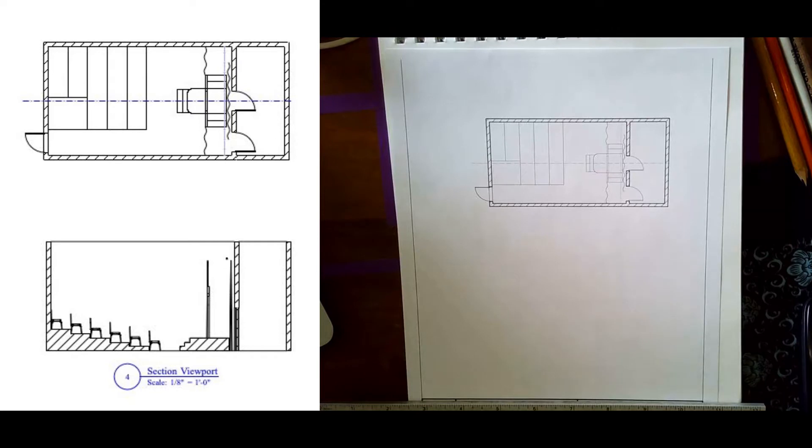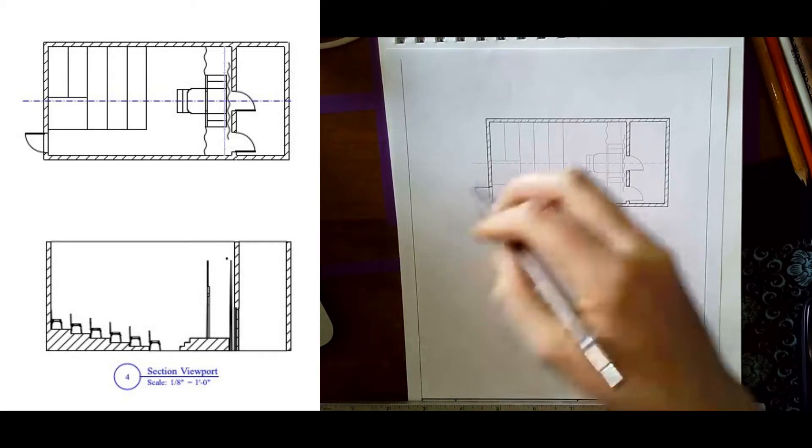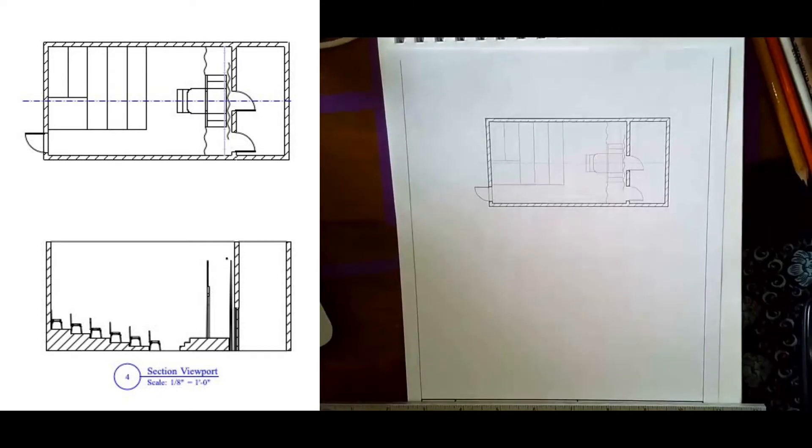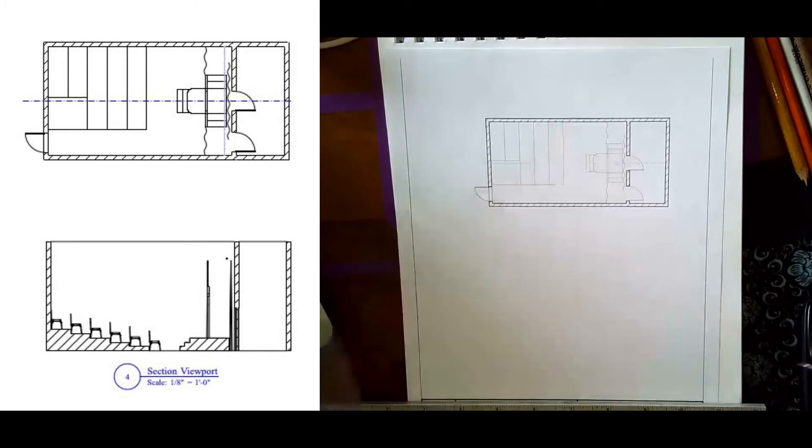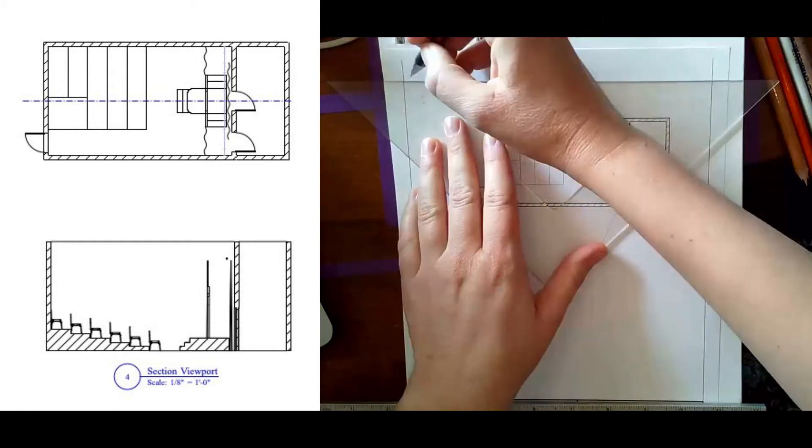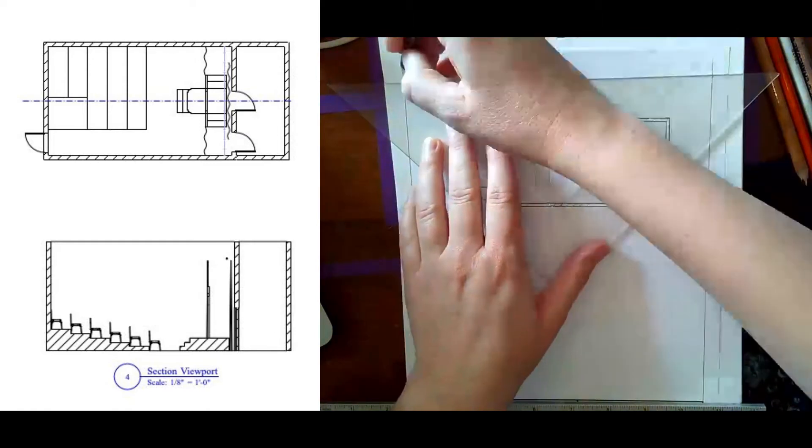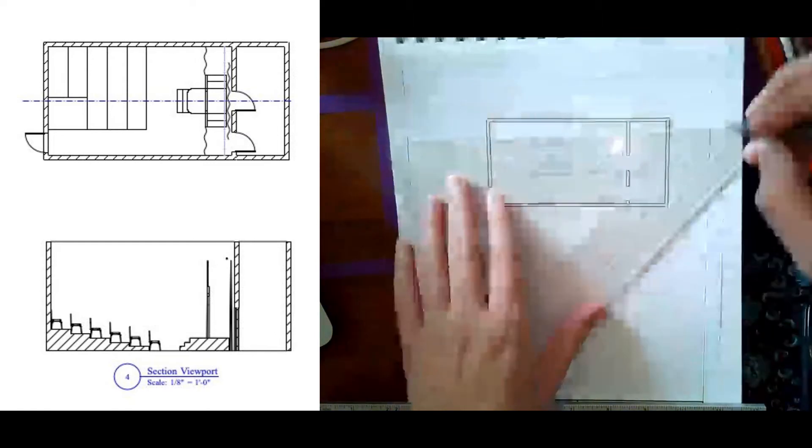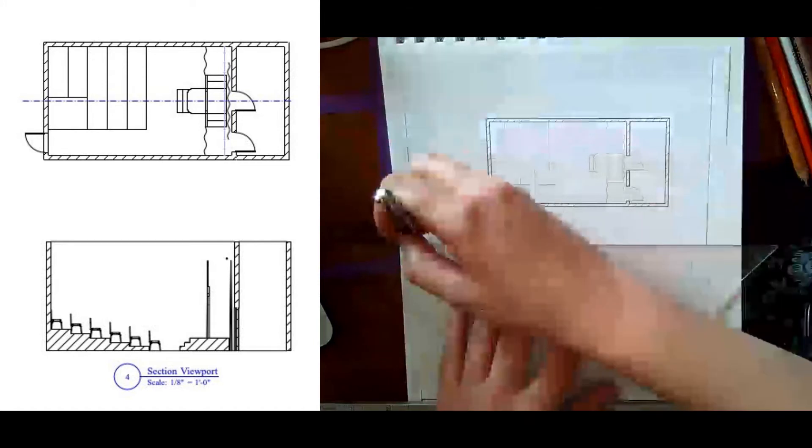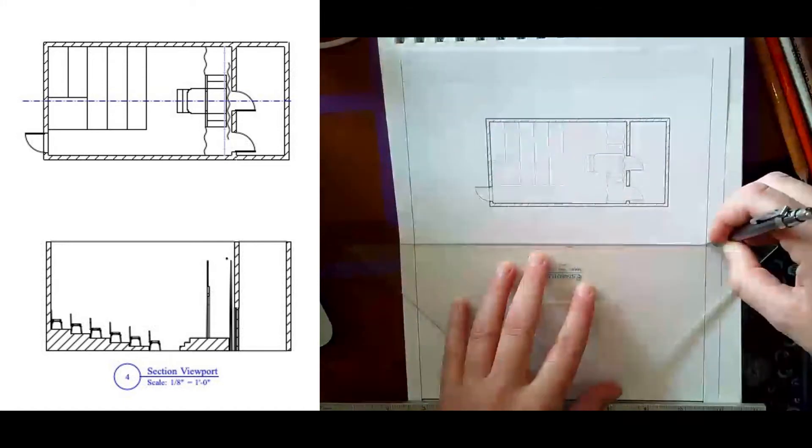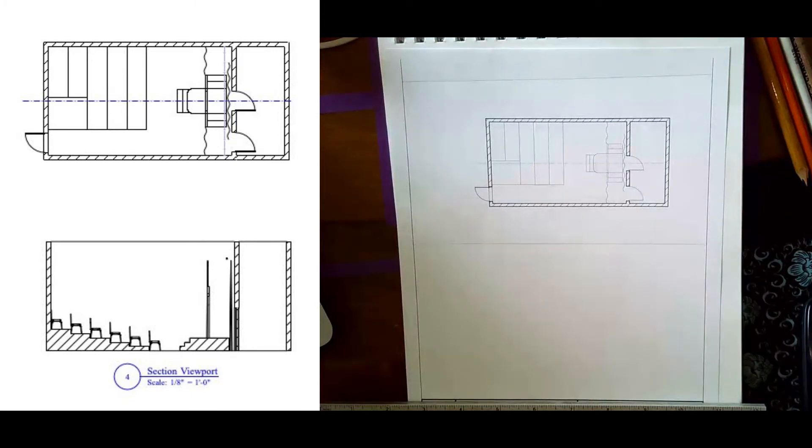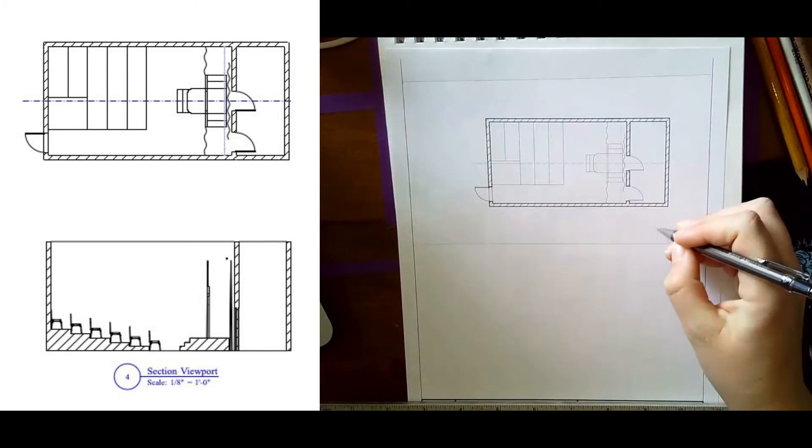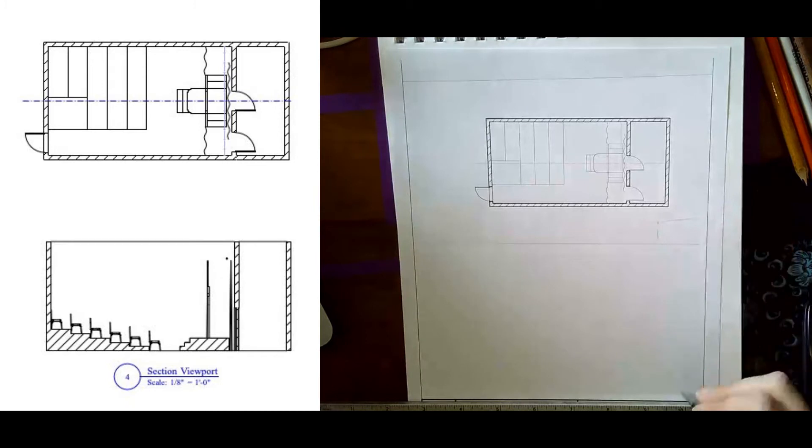So here we are. This is my ground plan view of my project. What would be happening at this point in your life is there would be a piece of paper on your drafting table with your ground plan on it, and then there would be a second piece of paper down below it where you're going to draft your section view. So you've got your little title blocky blocks. It's going to be so great.